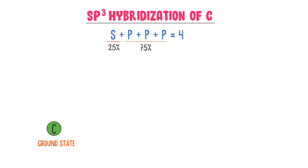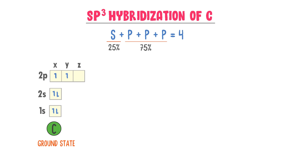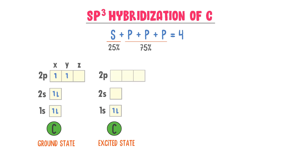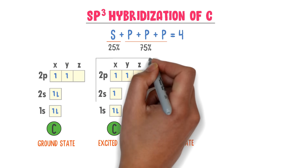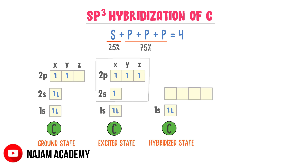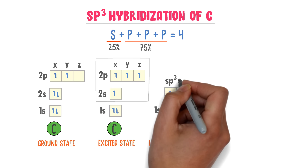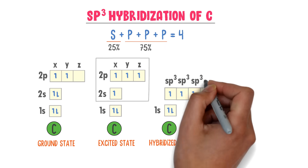Consider a carbon atom in the ground state. There are six electrons in carbon. In 1S there are two electrons, in 2S there are two electrons, while in 2P there is one electron in the X orbital and one electron in the Y orbital. In the excited state, one electron from 2S jumps into the Z orbital of 2P. Then this 2S orbital and the three orbitals of 2P — X, Y, Z — mix and combine together to form four SP3 hybrid orbitals, each with one unpaired electron of the same spin.